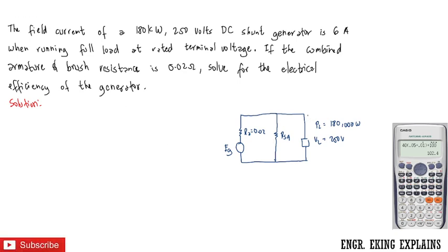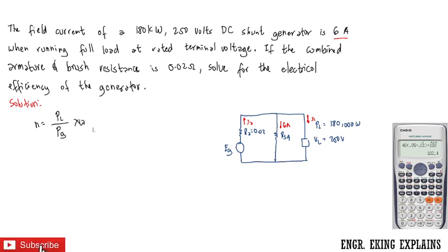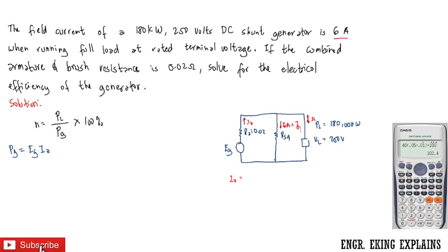From the diagram we need to find IL, the line current, and IA, the armature current. The shunt current Ish is 6 amperes. We need to find the efficiency, which equals the power of the load over the generated power, times 100. To get the generated power, Pg equals the generated EMF times IA. From the diagram, IA equals Ish plus IL.